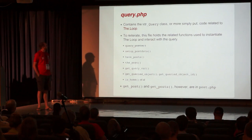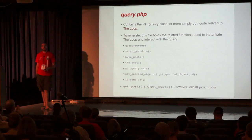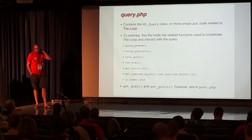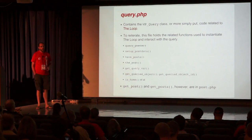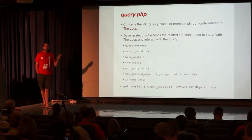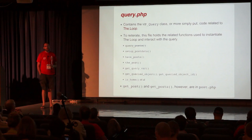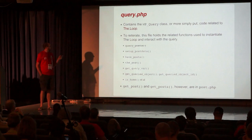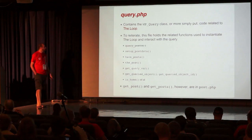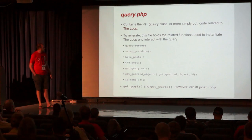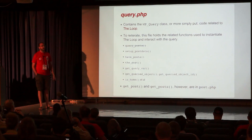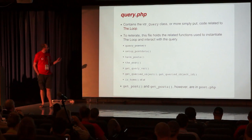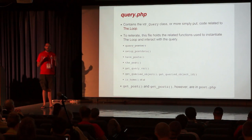Next: query.php. Again, this is where you're getting your content back from the database. This is the WP_Query class — it is everything related to the loop. So when you have 'if have_posts, while have_posts', the function have_posts is in query.php. When you create a query to show five posts on the sidebar for the current post, 'new WP_Query' is in here. get_posts — the conditional tags like is_home, is_front_page, is_singular, and so on — all in here. It's all related to getting the data back and where you are within WordPress.